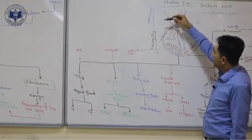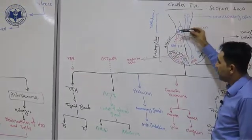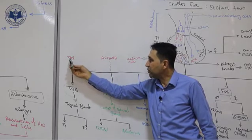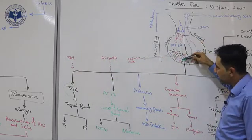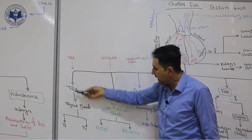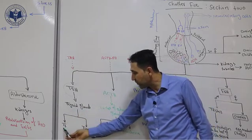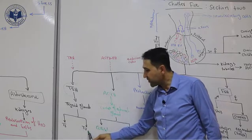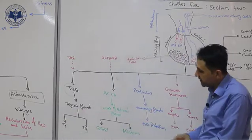For TSH: first, the hypothalamus produces a releasing hormone called TRH (thyroid releasing hormone). TRH stimulates the endocrine cells of the anterior lobe to produce TSH. TSH then stimulates the thyroid gland to produce two hormones: triiodothyronine and thyroxine.